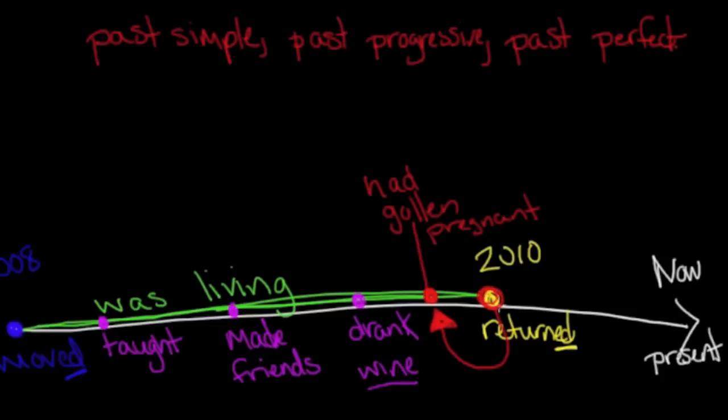So I had gotten pregnant before we returned to the United States. So that's when we use the past perfect, is when an action in the past happens before another action.